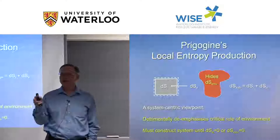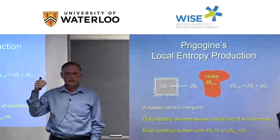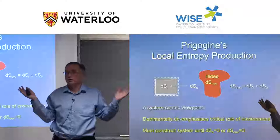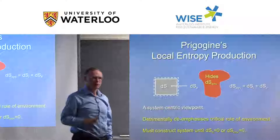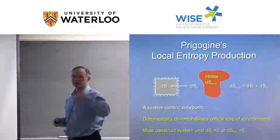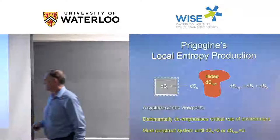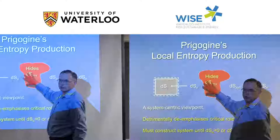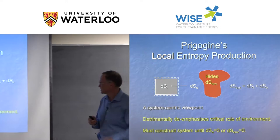For those who have done thermodynamics: in the second law, there is a temperature term — heat transfer over temperature. Students commonly get this wrong on exams because the temperature on the bottom is the environment temperature, not the system temperature, but it's de-emphasized even in textbooks. We must construct our system such that the entropy change in the environment is zero — assuming it's reversible with no entropy change outside.